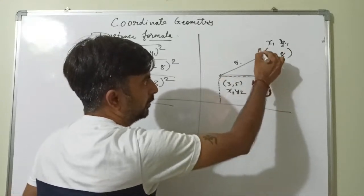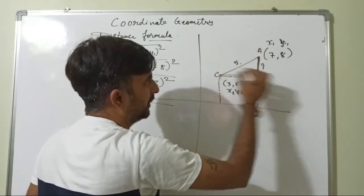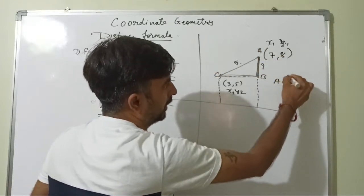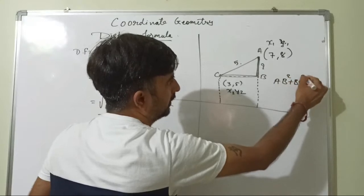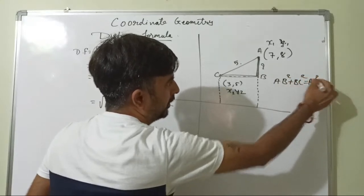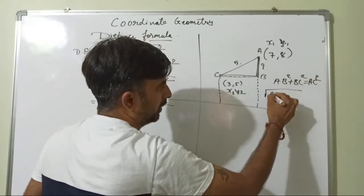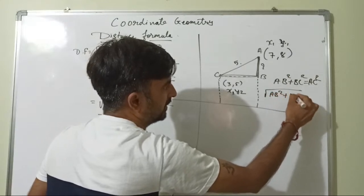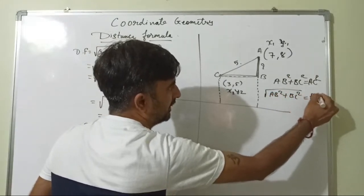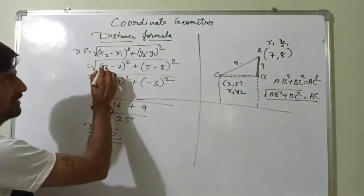And that square means let me take it as a, b and c. So a, b square plus b, c square is equals to a, c square. Right? Or I can write down under root a, b square plus b, c square is equals to a, c.